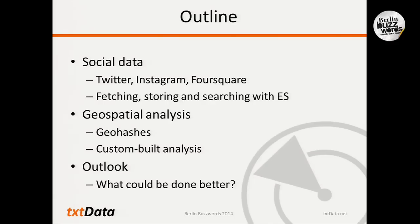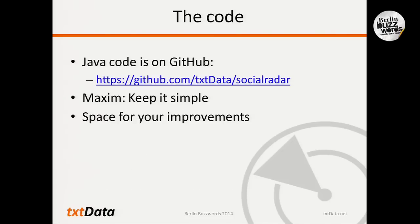We're going to talk about social data — Twitter, Instagram, Foursquare — what you can get there, how the data looks, how you fetch it, store it, and search with it using Elasticsearch. We'll talk specifically about geospatial analysis: geohashes and some custom-built analysis I'll show you. We'll also have an outlook on what could be done better, because what I'm presenting is by no means the final answer. The Java code is on GitHub — the maxim is to keep it simple, and there's lots of space for improvements.